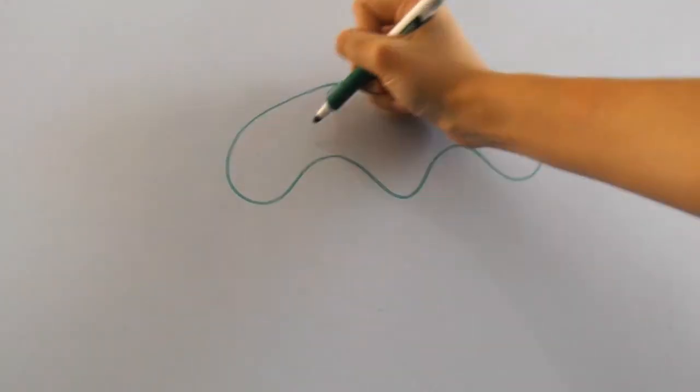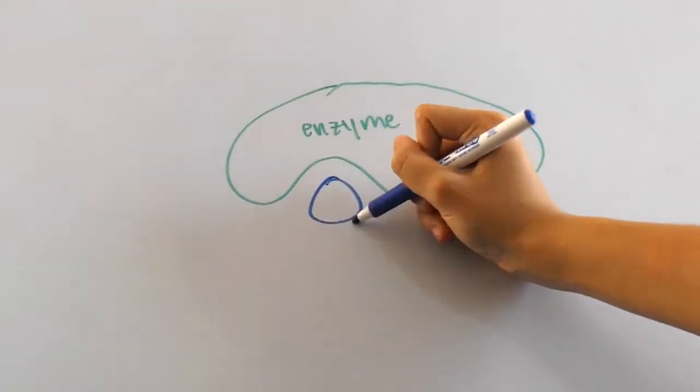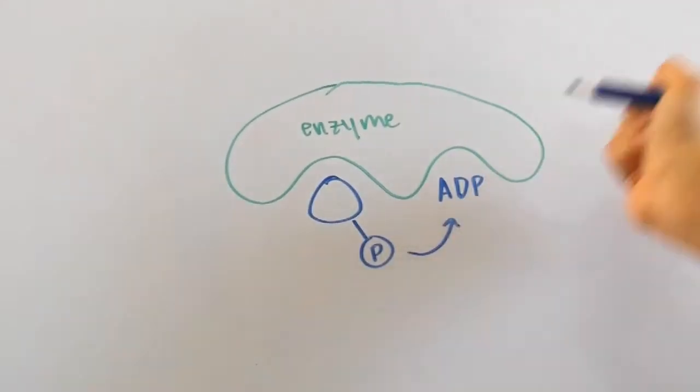Some enzymes even make ATP by a process called substrate level phosphorylation. In this process, an enzyme can actually transfer a phosphate group from one substrate onto another ADP molecule.